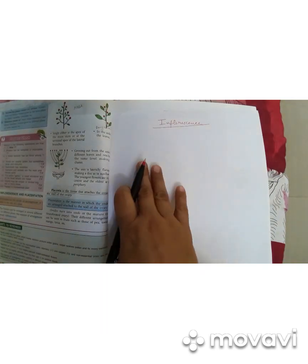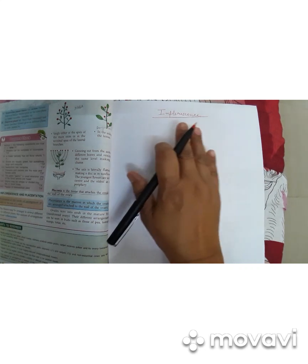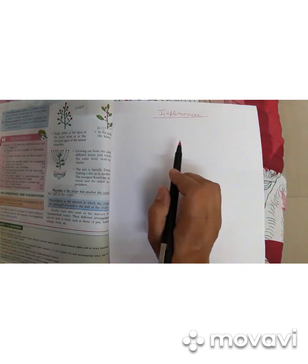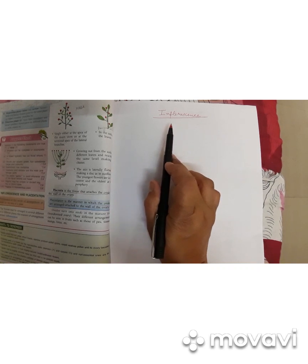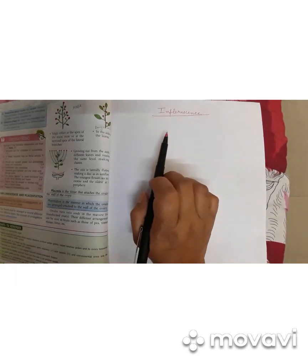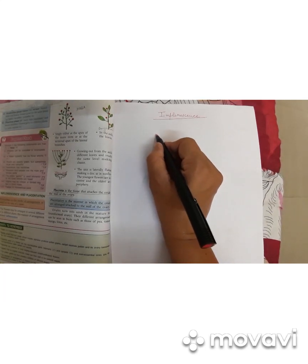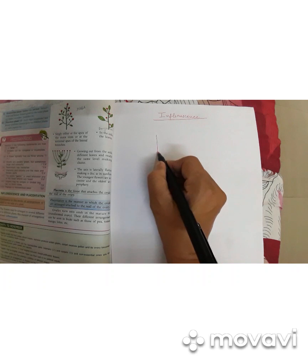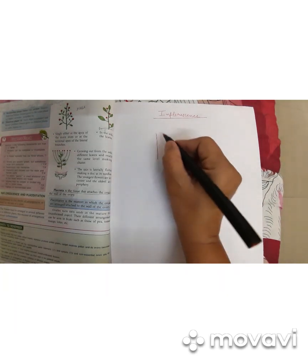Welcome back students. Now let us start the new topic which is inflorescence. Inflorescence means the manner of arrangement of the flowers on the shoot, or you can say the mode of arrangement of the flowers on the apex. Basically there are various ways in which flowers are arranged on the main stem.